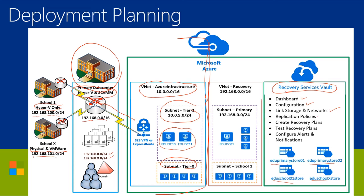You also link to networks — whatever networks you define in the subscription where site recovery is defined can be used for site recovery purposes. This is also where you define your replication policies: the 30-second, 5-minute, or 15-minute replication policy. You create your recovery plans — how do these VMs come up, in what order do they come online, are there delays in between, do you have manual or scripted steps? You can test recovery plans from this Recovery Services Vault, and you can also configure alerts and notifications.